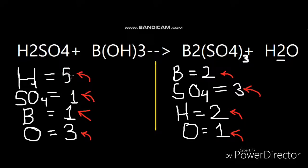Let's start balancing. I will start with hydrogen — I have five hydrogen atoms here and only two here. But I cannot balance them because five is not divisible by two. So I will skip hydrogen for now.